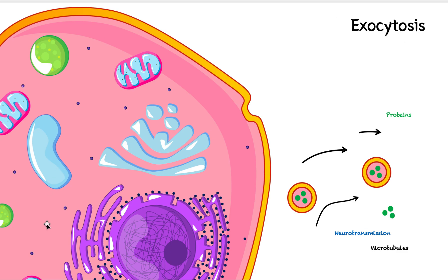Sometimes a cell makes things it wants to send to other cells — it's kind of like a manufacturing company that makes materials and exports them to other places. Some cells can make things that other cells need but can't produce themselves, so these cells do exocytosis to send it out. And again, it's always going to be big molecules or many molecules transported at once.